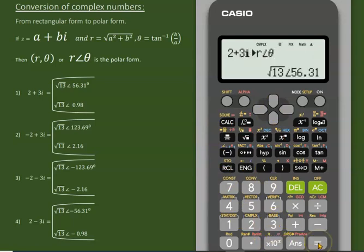And then equal. √13 is the modulus or the r value, and 56.31 is the degree angle because my calculator is in degree mode, you see.